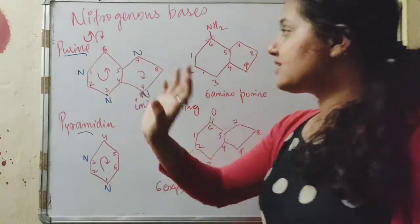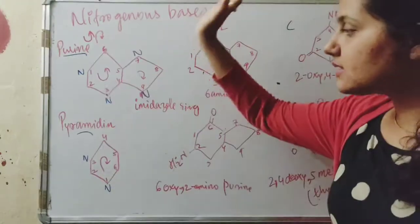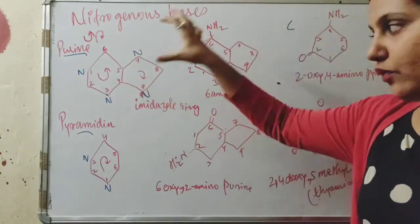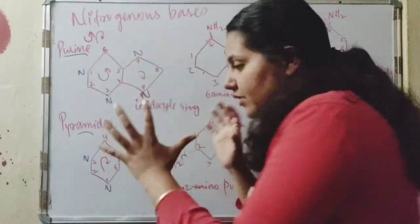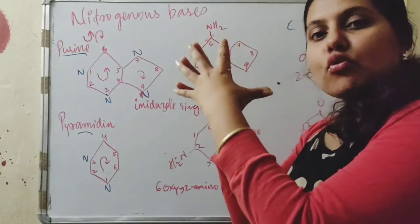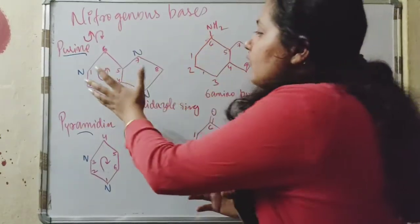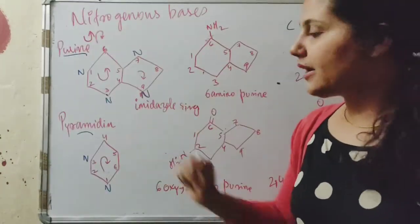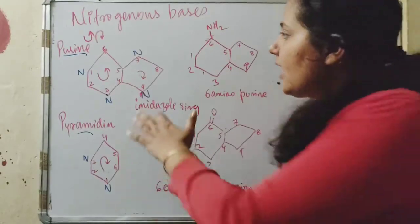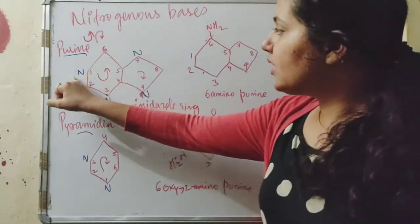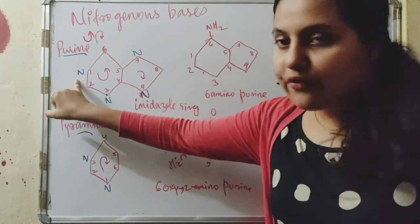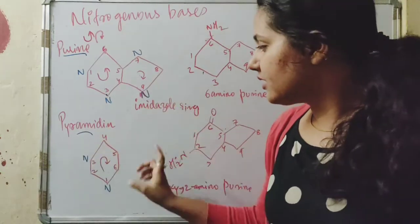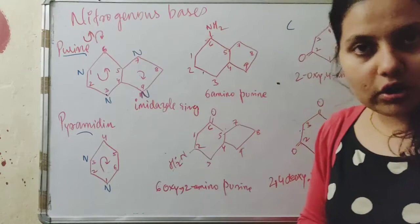Here I have drawn a purine. Purine is the pyrimidine plus imidazole ring — when the pyrimidine forms a bond with the imidazole ring, it forms a purine. Purine is bicyclic and the pyrimidine is monocyclic. Purine has nitrogen at the first, third, seventh, and ninth carbons, but in pyrimidine there is nitrogen at the first and third carbons only.